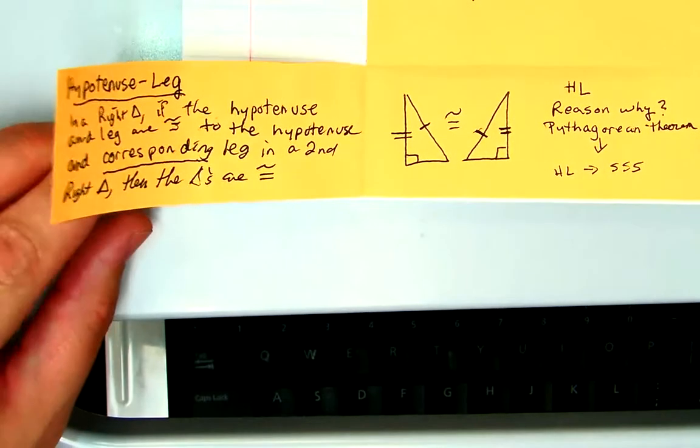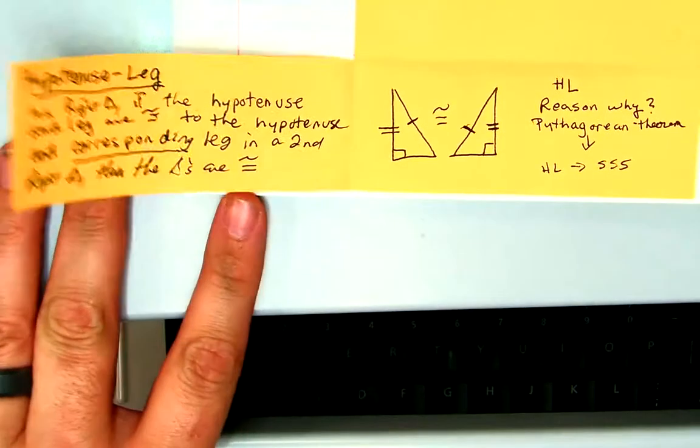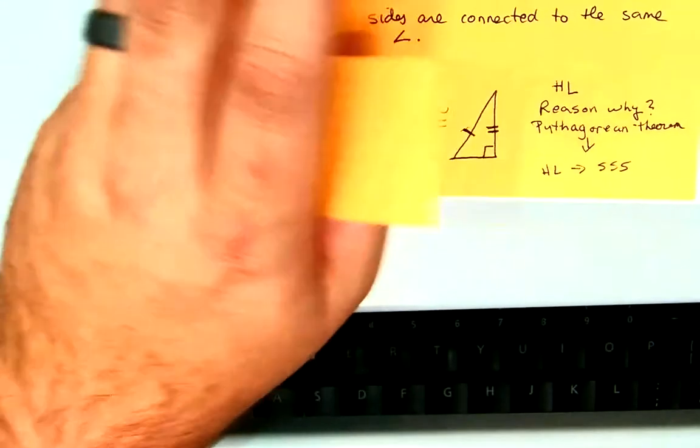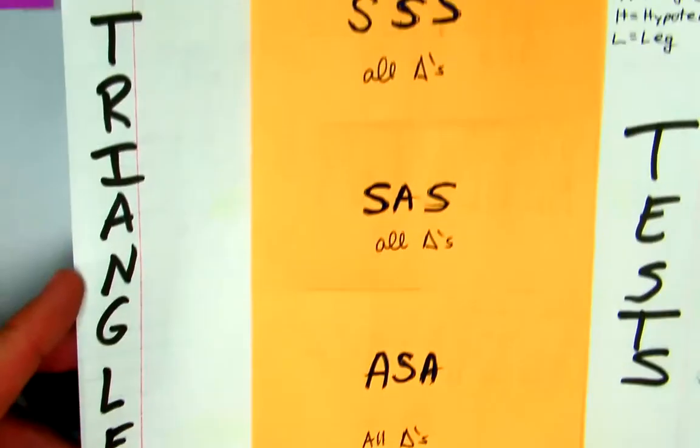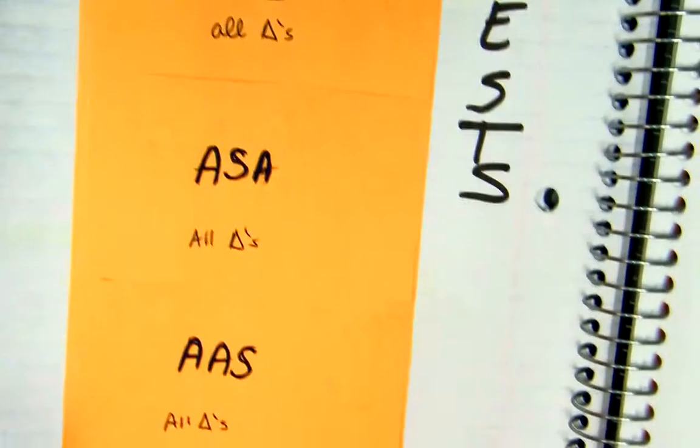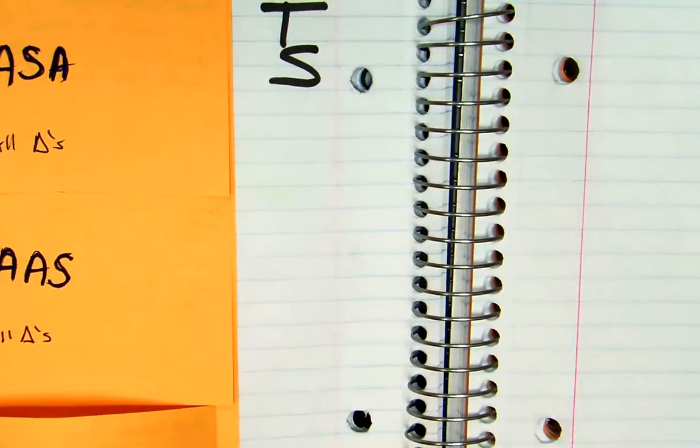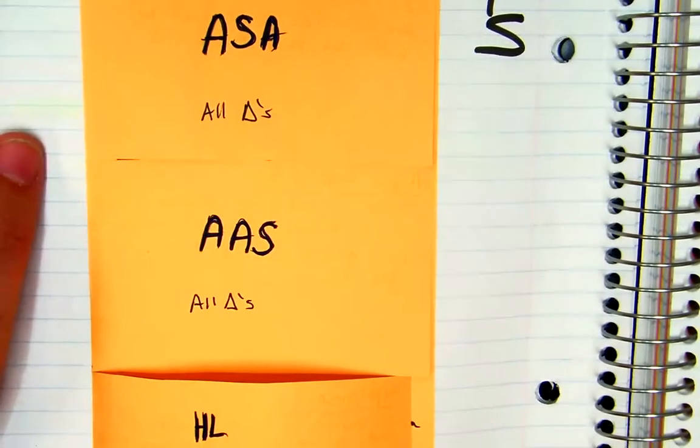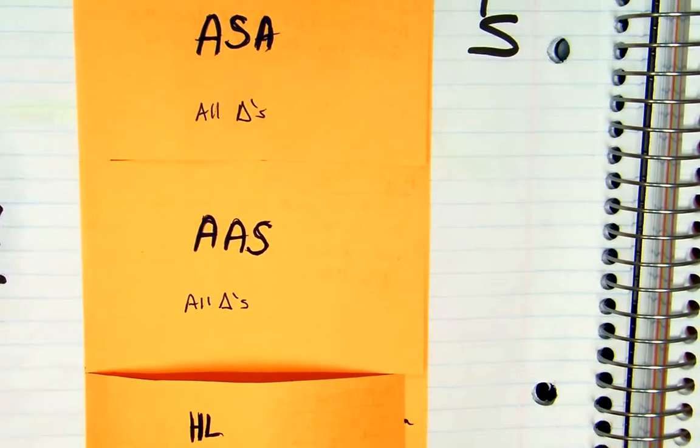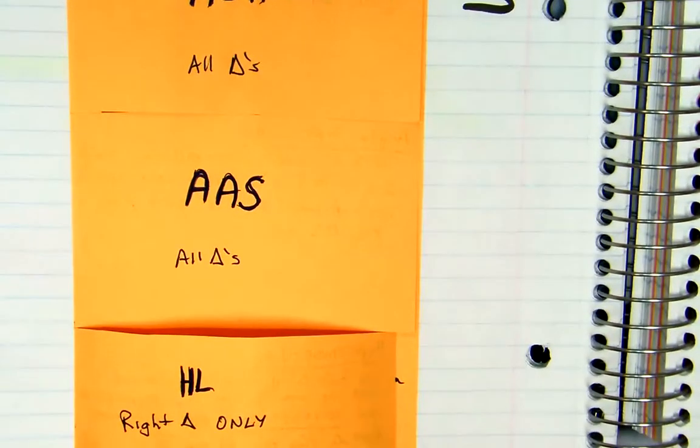Now any questions on hypotenuse leg? Nope? No? We're good? Alright, so we have this which you will refer to and hopefully use a lot of, because these are the tests that we are going to always try to build. You're going to want to build to side-side-side, side-angle-side. Use all the rules that you know that you have at your disposal to do this. Now some other things that you need to be really concerned about while you're doing this.